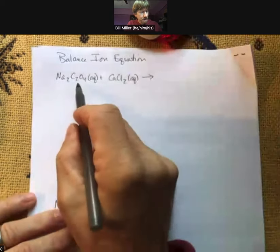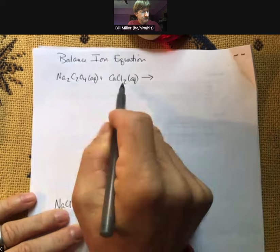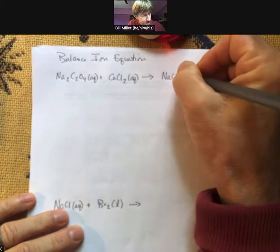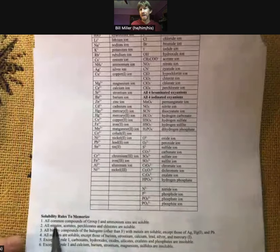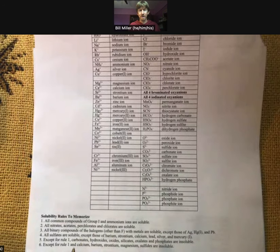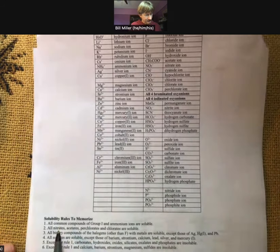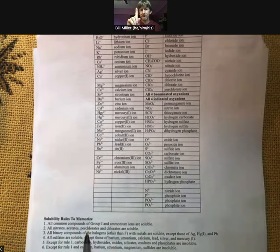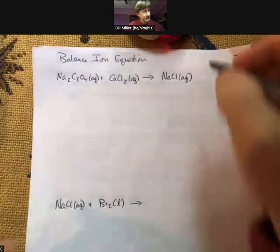What you do is you have to switch partners for a double replacement. That means the sodium plus is going to go with the chloride minus. While the problem tells you what the answers are for the products, I'm going to use my solubility rules. All common compounds of group one, and sodium's in group one, are soluble. Soluble things are aqueous, so that's how we know this is aqueous.